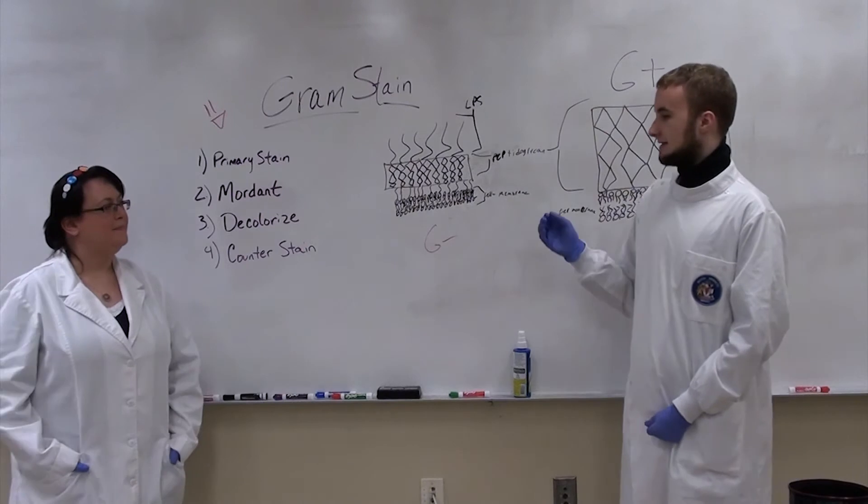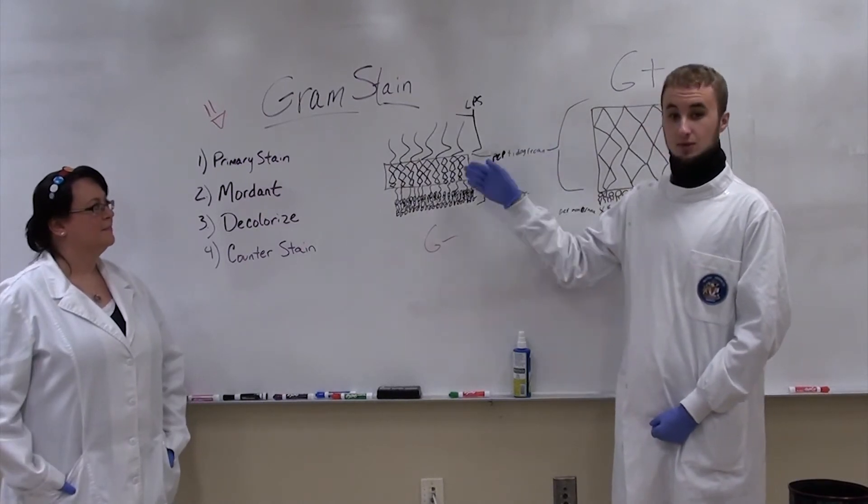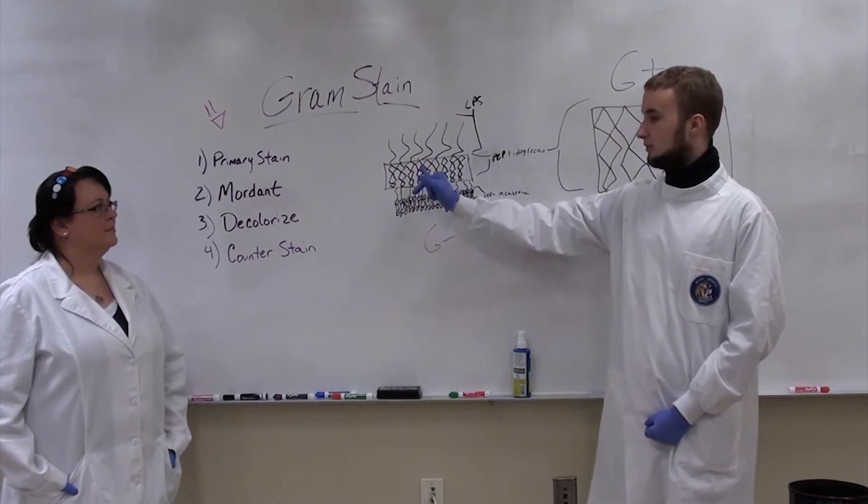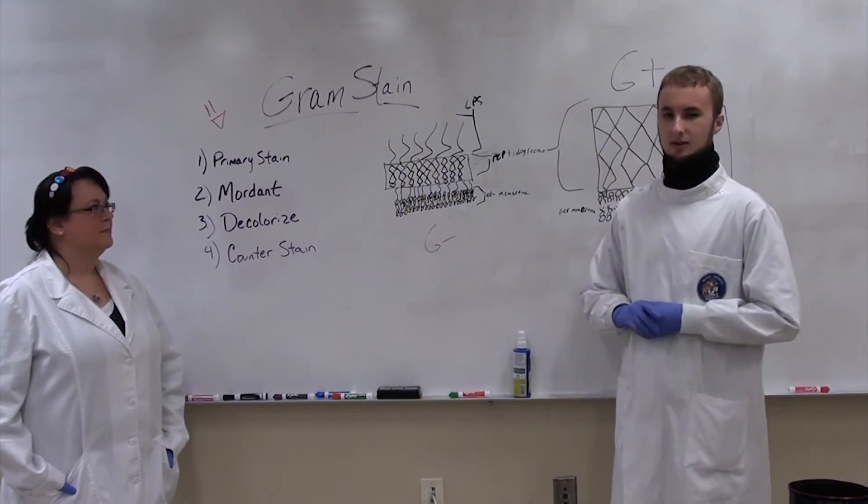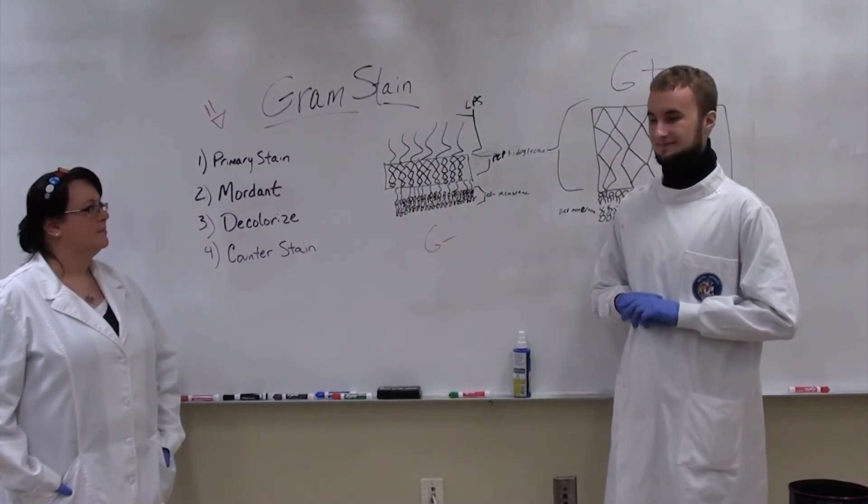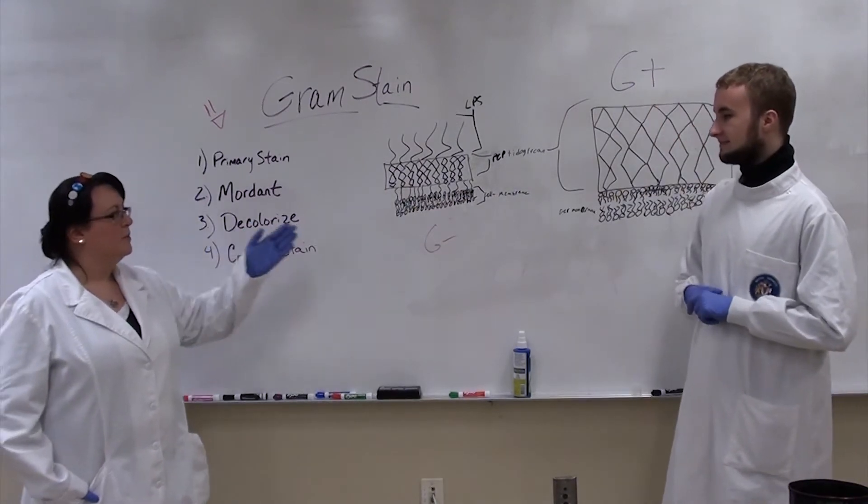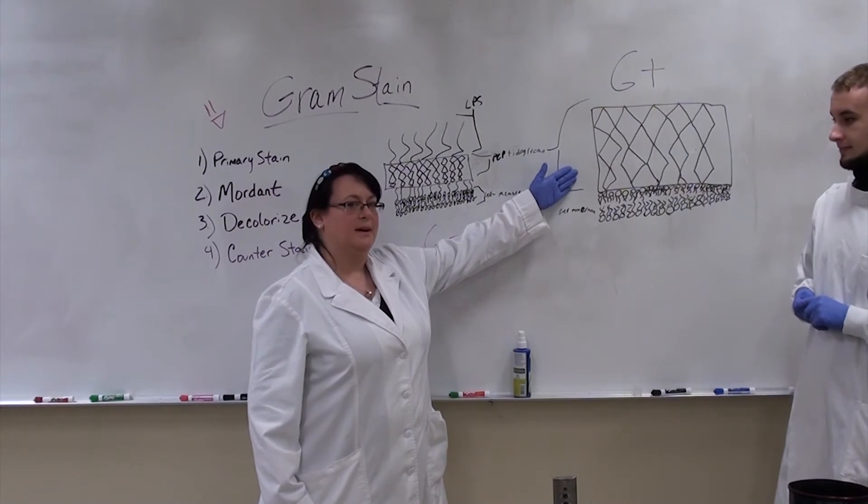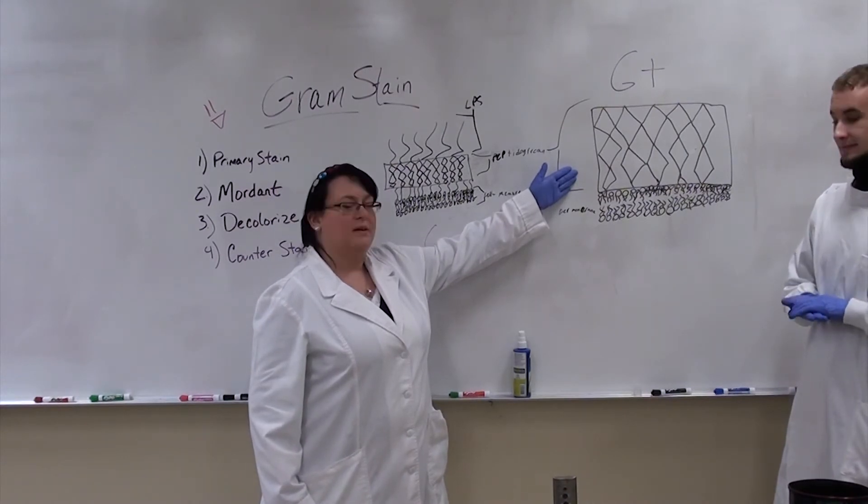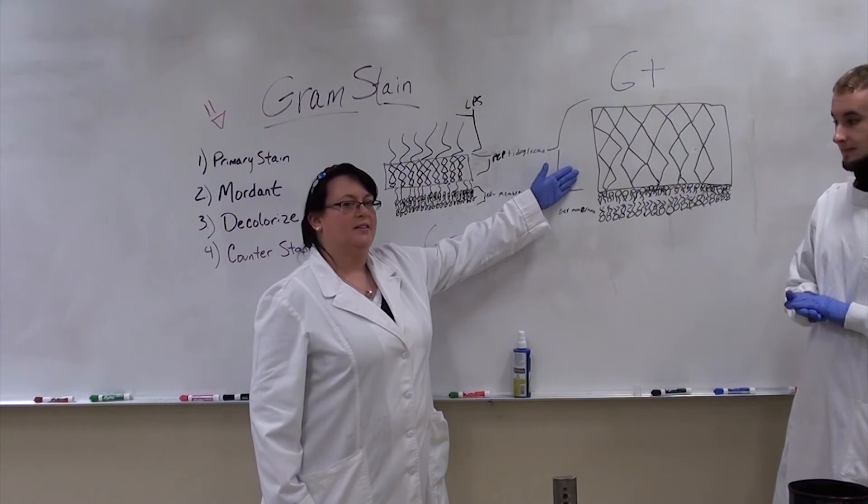Right. That is because the decolorizing agent will not only destroy the LPS layer, but will remove any dye that is trapped within the peptidoglycan layer because it's so thin, only really five to ten layers. And the mordant step will help enhance crystal violet-iodine complexes in the thick peptidoglycan layer present in the gram-positive cell, reducing the amount of decolorization that will happen.